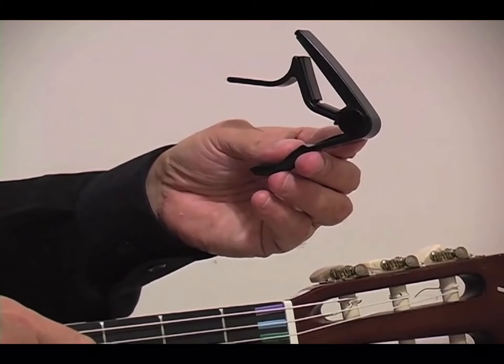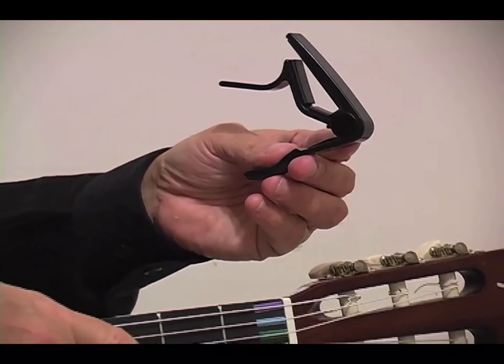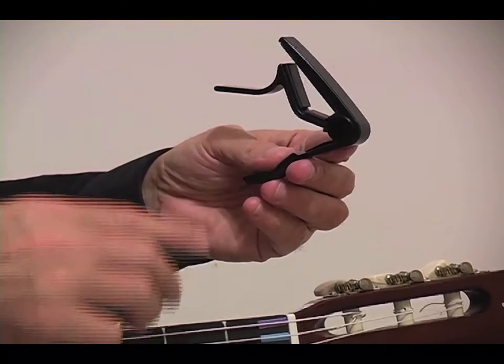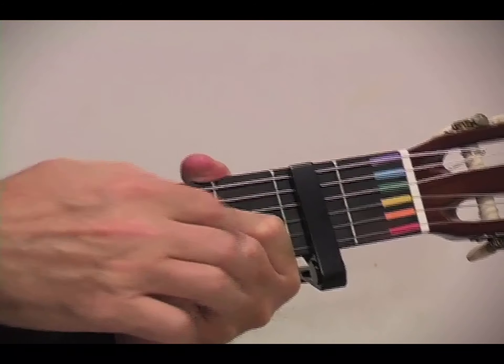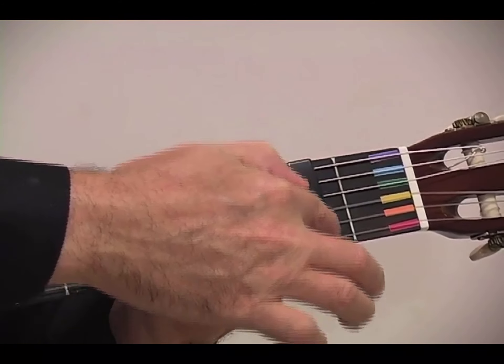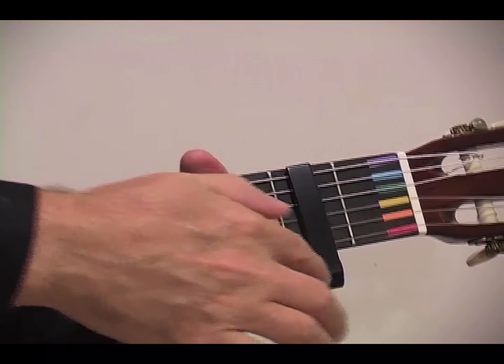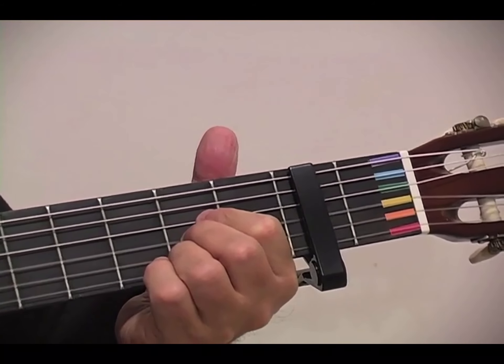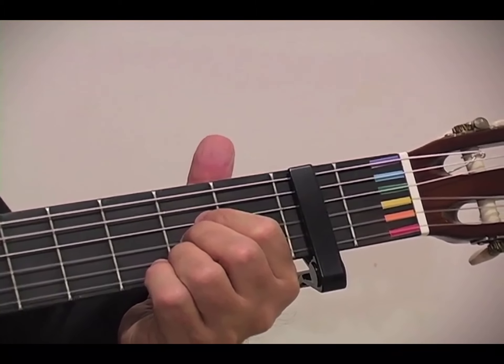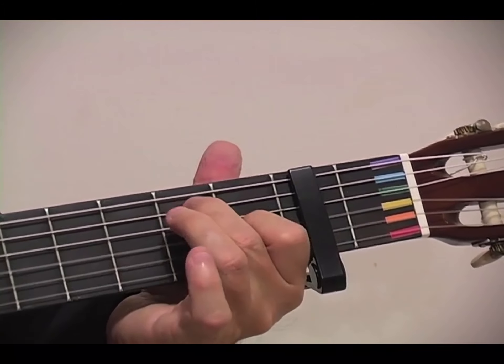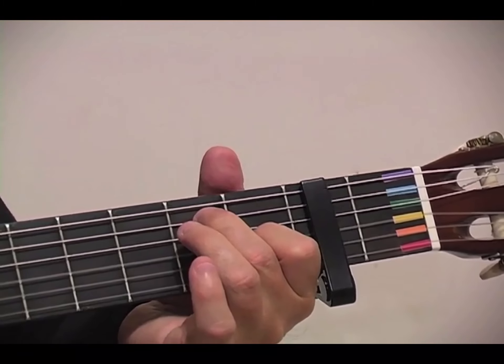The capo is a device used for shortening the strings, and in this way, raising the pitch of your guitar. Here we show you how to do this. Place the capo over the second fret. Now, by playing the combination of chords for La, or A, you are now playing the combination of chords for T, or B.